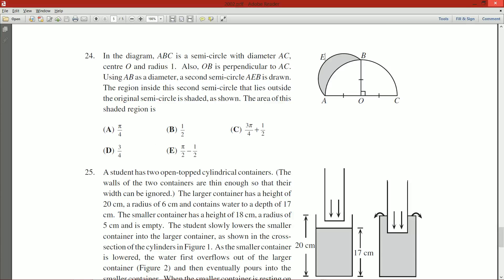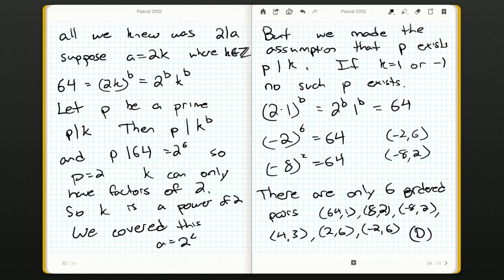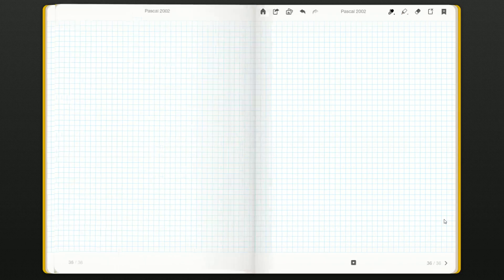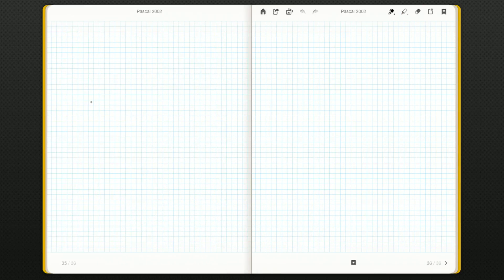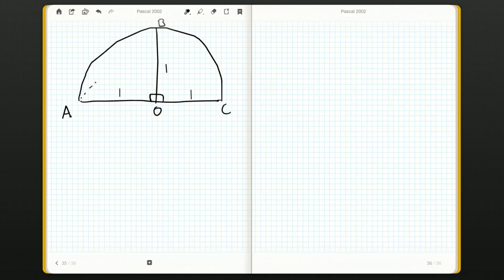Let's redraw our picture and construct this semicircle AEB with that key diameter AB in there. With all of these find the area shaded region questions that pop up on these contests—the Waterloo contests and other contests—I always find that there's a nice easy pattern to doing them.